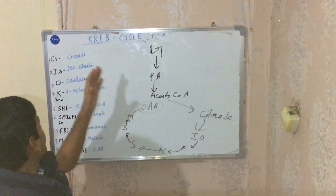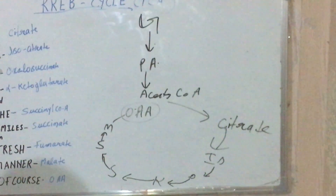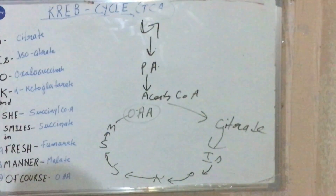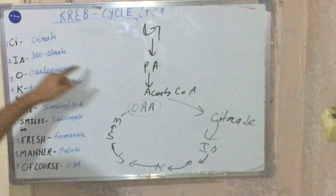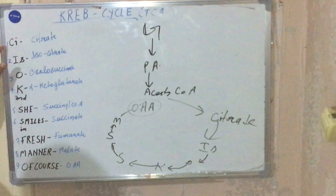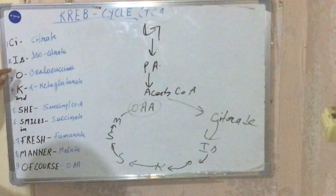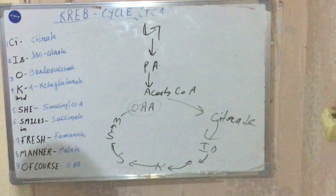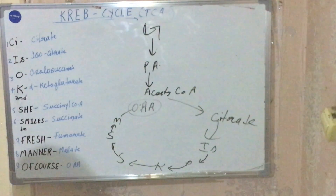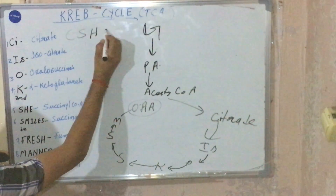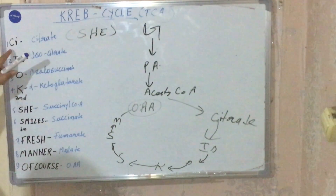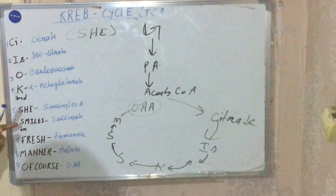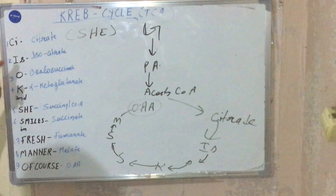Since we cannot forget all these steps, I have made a simple mnemonic to remember all eight steps. The mnemonic is: 'She is okay, she smiles in a fresh manner of course.' You can write it down — she is okay, she smiles in a fresh manner of course.